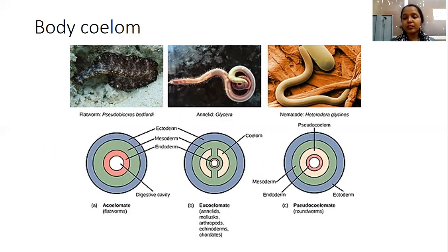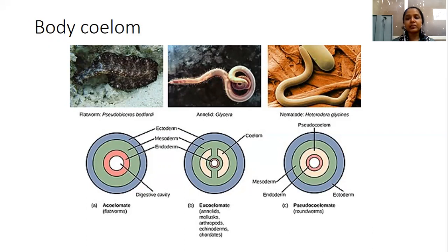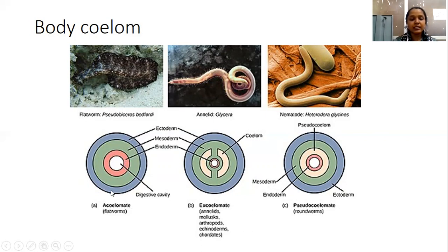The animals which do not possess coelom come under acoelomates. It means there is no fluid-filled cavity in them. The space between the gut and the wall is filled by densely packed connective tissue derived from both the ectodermal and endo-mesodermal areas — that is called the parenchyma. In case of the acoelomate, the cavity is filled by parenchymal cells. Most triploblastic animals not having the coelom are called acoelomates. Examples are the platyhelminthes and nemataria. In the picture, we can see the acoelomate individual body wall with the digestive tract, and there is no coelomic cavity.